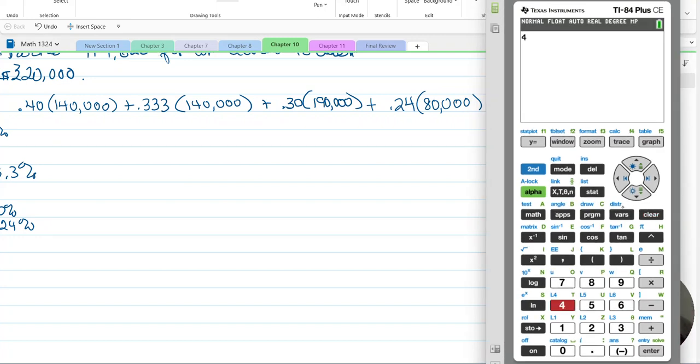So I'm going to have the 0.40 times 140,000 plus 0.333 times 140,000 plus 0.30 times 190,000 plus 0.24 times that last remainder 80,000. And I get 178,820 dollars. It's what the attorneys will get on the award given of $550,000.